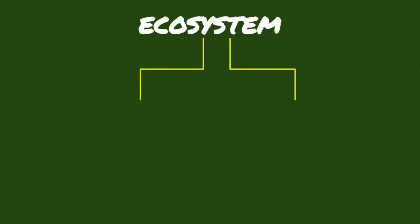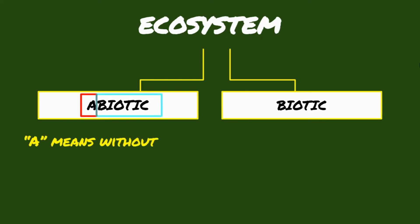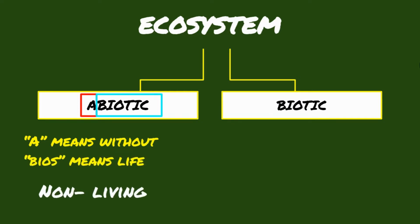An ecosystem is made up of abiotic and biotic components that work together to maintain balance. Preceded by the prefix 'a', which means without, followed by the Greek word 'bios', which means life. Abiotic, therefore, means without life. It is the non-living components or the physical and chemical aspects of an ecosystem.